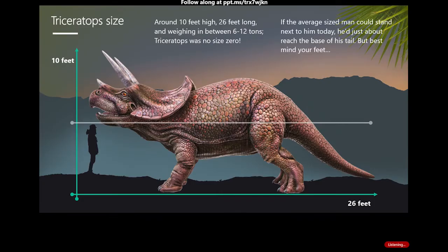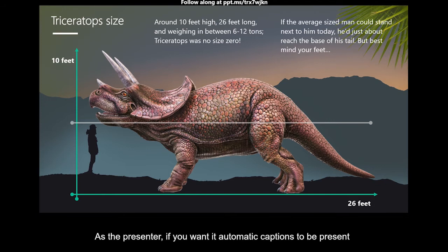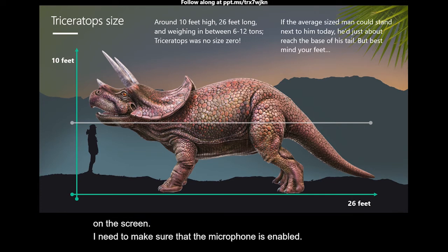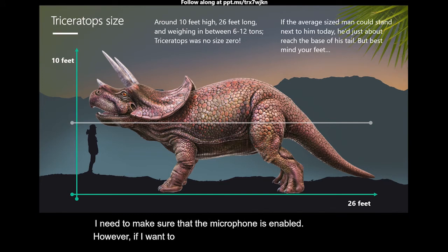As the presenter, if you want automatic captions to be present on the screen, you need to make sure that the microphone is enabled. However, if you want to turn off the captions, you can click on the microphone icon to disable it.